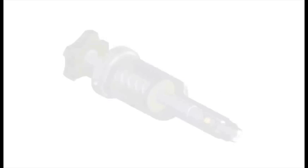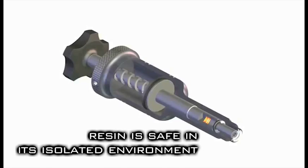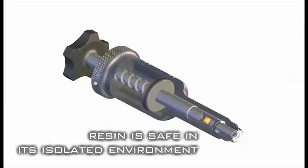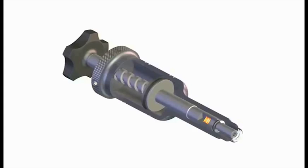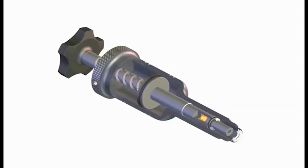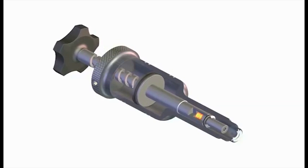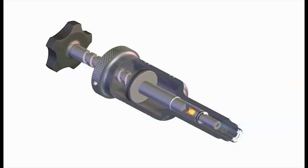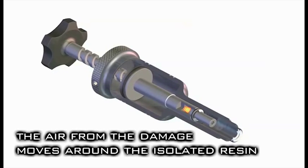The unique design of the G3 also allows for resin isolation. What does this mean? In this cutout, notice that the amber resin is in the resin chamber. Notice that as the vacuum cycle occurs, the resin stays in this chamber. Any air that is pulled from the damage moves around this resin chamber.